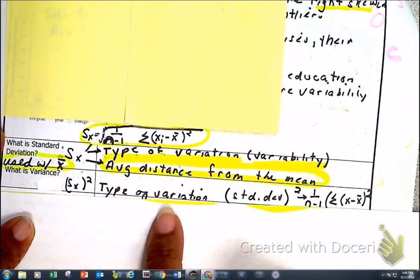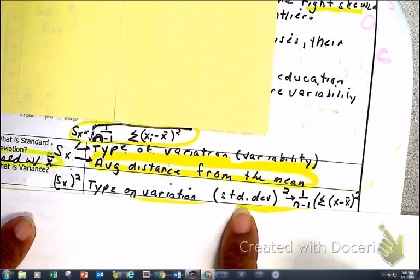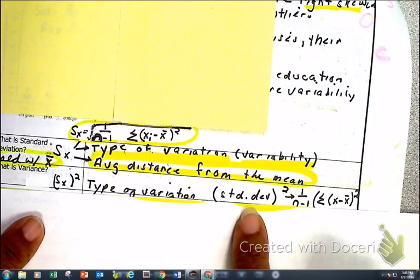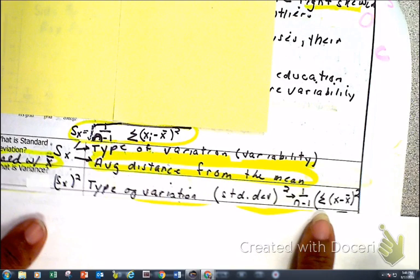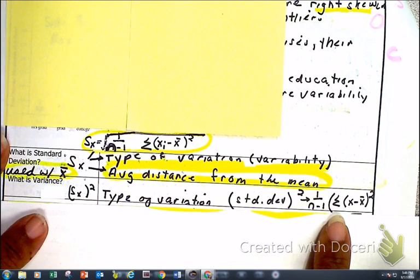Variance is a type of variation, and as you can see, it is nothing but standard deviation squared. Here is the formula — another formula that you'll be given that you don't have to use, but even better than that, it's in our calculator.